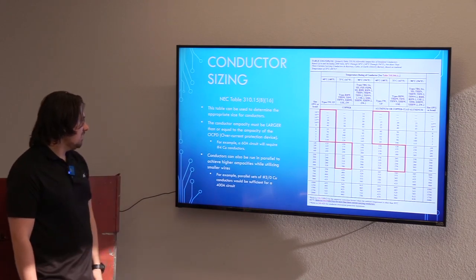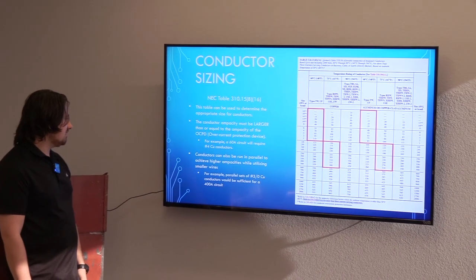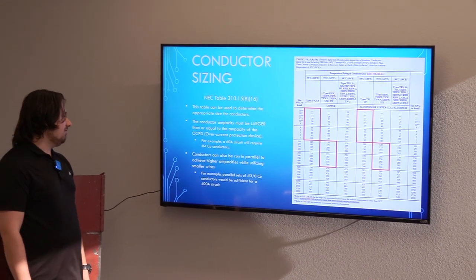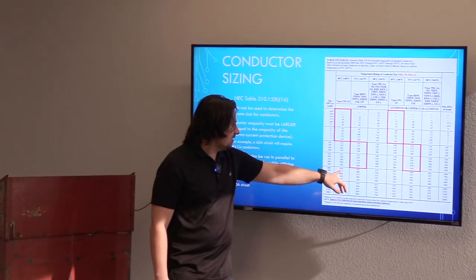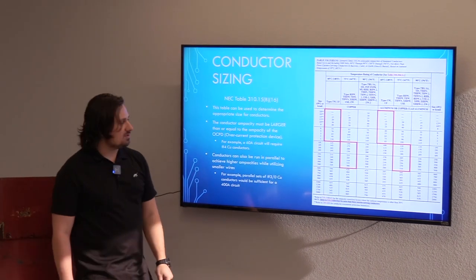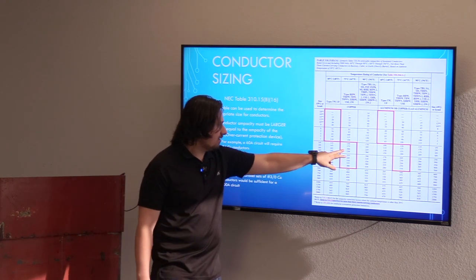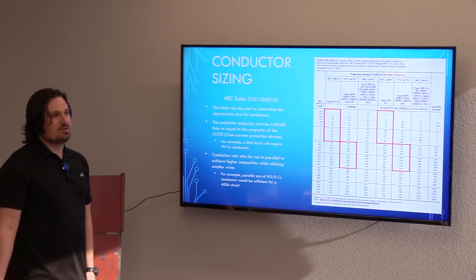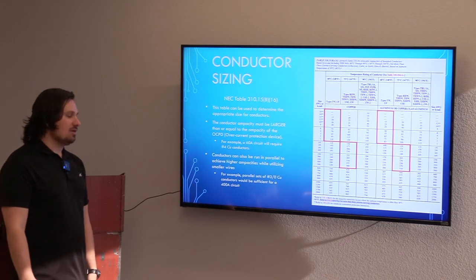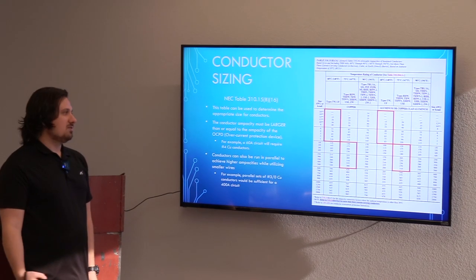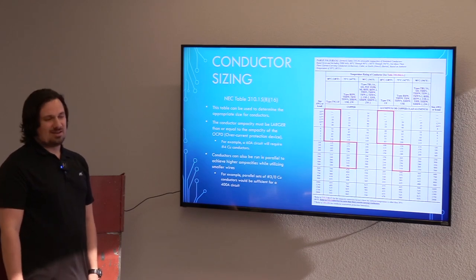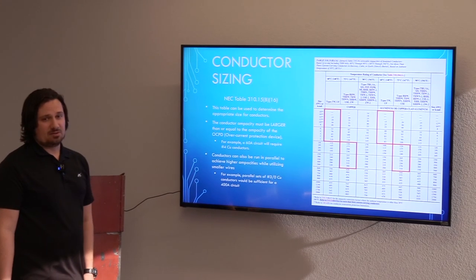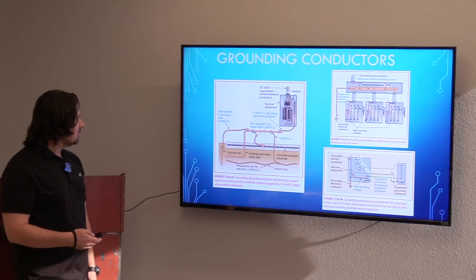Conductors can also be run in parallel to achieve higher ampacities while utilizing smaller wires. For a 400-amp circuit, we could use a 600 kcmil wire good for 420 amps, or double up on 300 kcmil at 200 amps each, for a total of 400 amps. There's variation depending on design — sometimes a single conduit and conductor set is better, sometimes parallel sets are better. That's often determined on site by the contractor, since bending smaller wires is easier than bending thicker gauge wires.